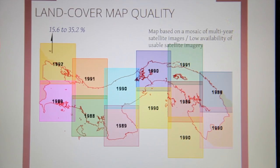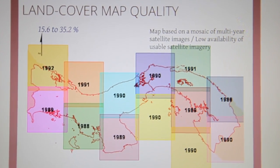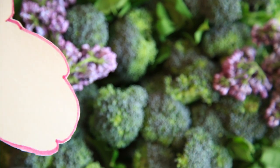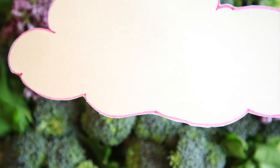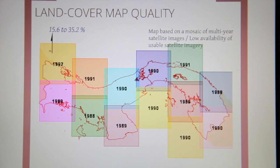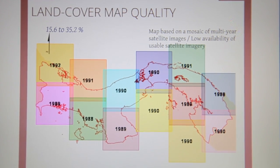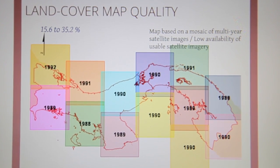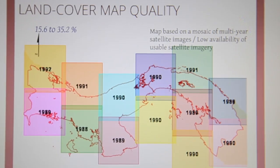To estimate emissions from land cover change, we need to use maps, and these maps are made of a mosaic of satellite images that are often contaminated by clouds. So to make one map, we often have images from different years, meaning that when we compare two maps, different areas will have different time intervals between the images.